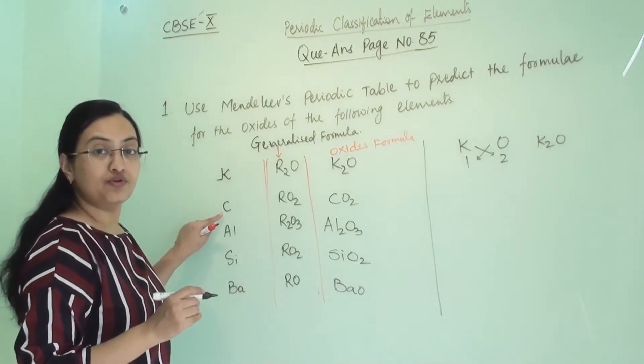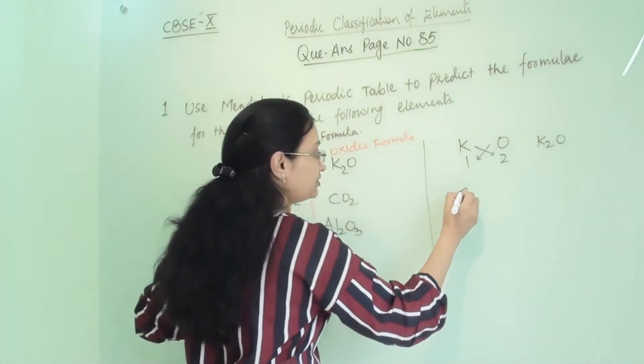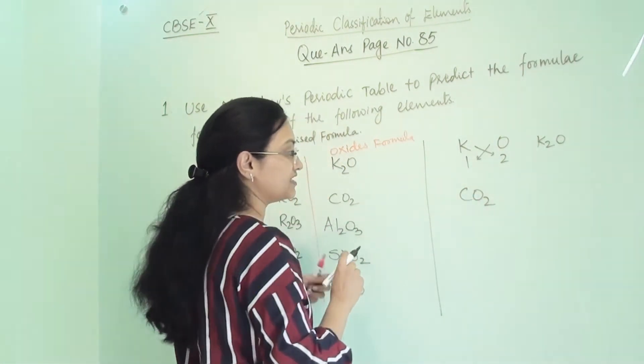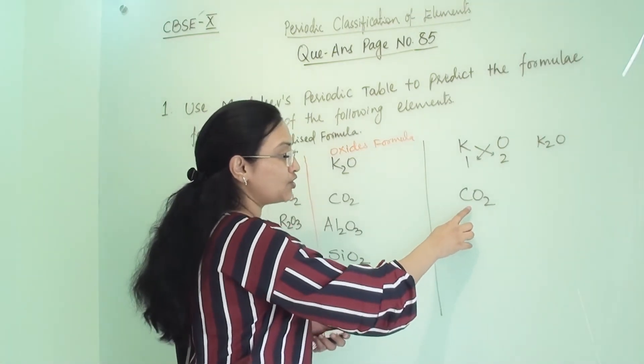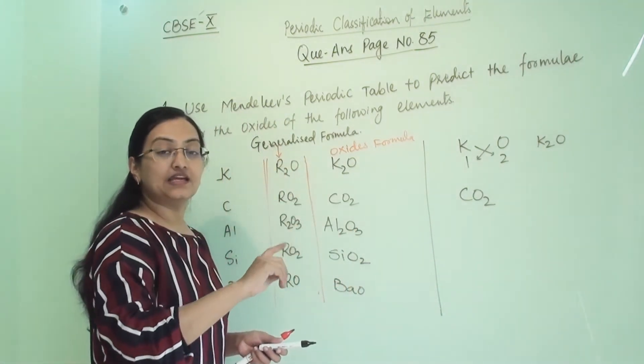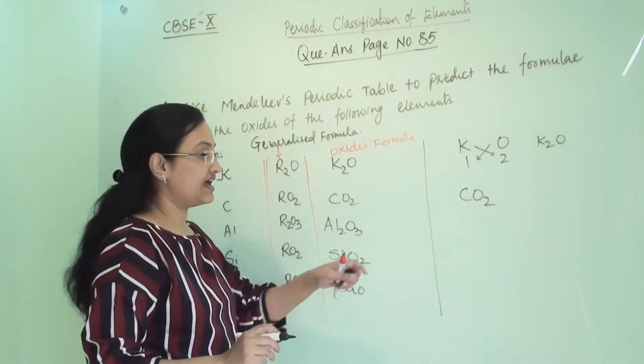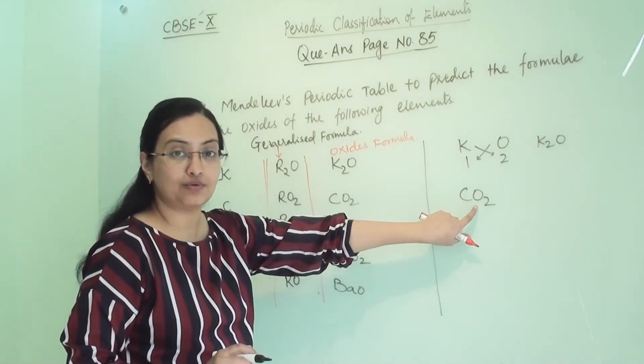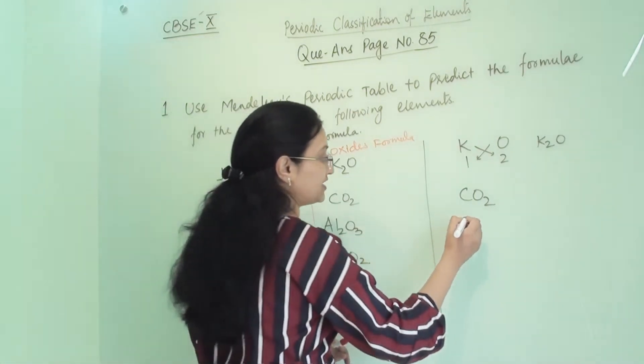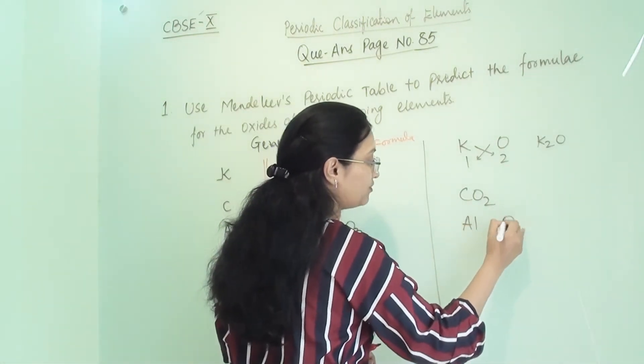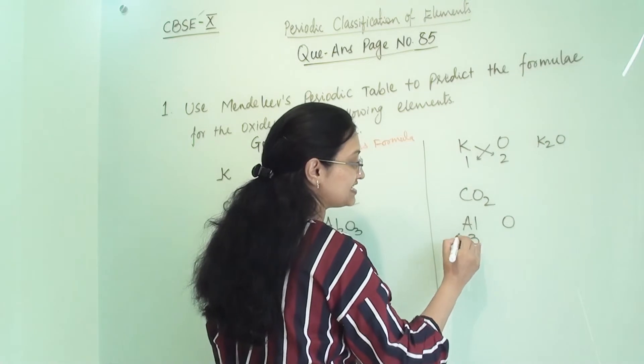Now we have to write carbon's oxide. So we know that it is carbon dioxide. Here we are not going through the combining capacity because this is a covalent bond, so we have to write the direct molecular formula CO2. Now here aluminum oxide, so here Al and O. So aluminum's valency is 3, whereas oxygen's valency is 2.